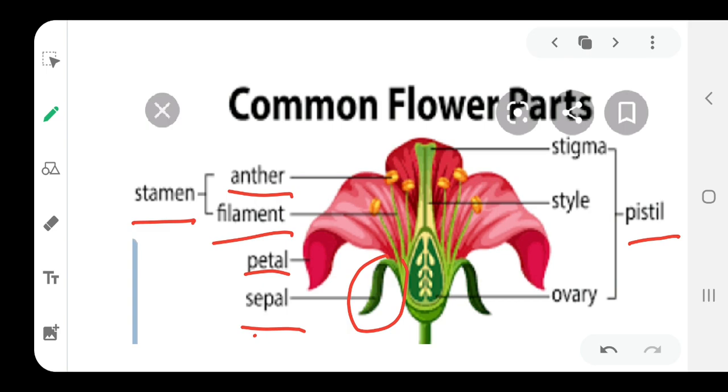Next is pistil. Pistil is the female part of the flower which includes stigma, style, and ovary. The stigma is where pollen grains collect. Then there is style, and this portion of the flower is known as ovary. These are the different parts of the flower.